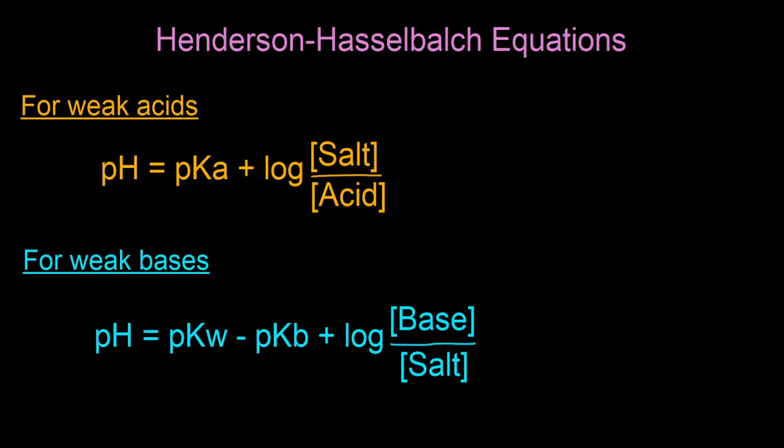The Henderson-Hasselbalch equation allows you to do a number of things. First, it allows you to calculate the pH of your buffer system if you know the composition — once you know the concentration of the salt and acid and the pKa, you can easily calculate pH. Second, it allows you to calculate the molar ratios of the components of your buffer system, which is important when you need to know exactly how much to weigh out. Third, it can let you determine the change in pH once you've added some small amount of acid or base.